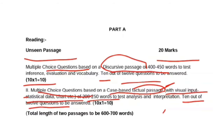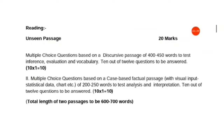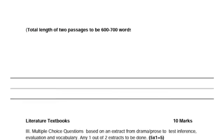So you have to attempt every answer and you will get one mark per answer. Total, your reading section will be of 20 marks, because two unseen passages of 10-10 marks each will be asked from you.